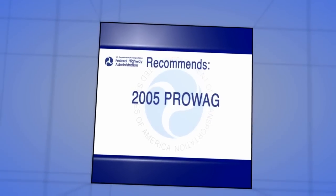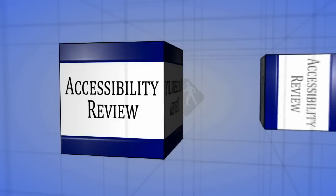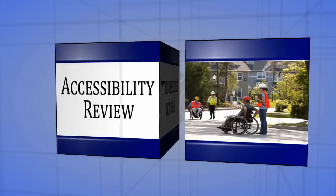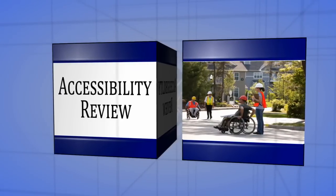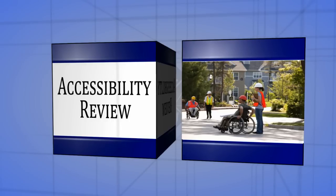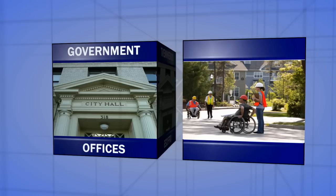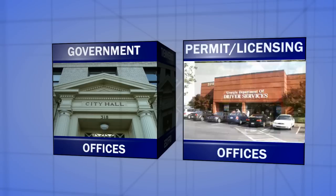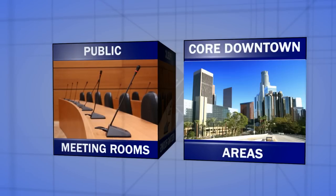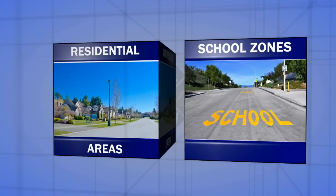While all facilities you manage are important, there are some critical areas that require immediate attention for accessibility review. Some of the areas that may need to be prioritized include public places that people in your community are likely to frequent, such as public rights-of-way to access government offices like permit or licensing offices, public meeting rooms, core downtown areas, medical facilities, school zones, and residential areas.